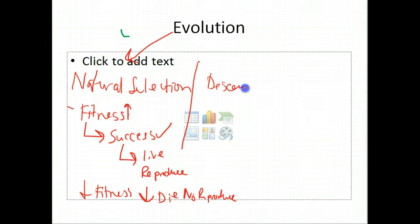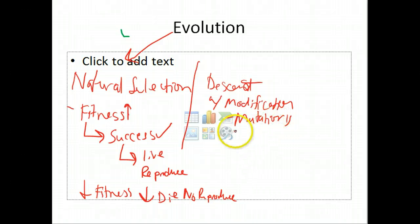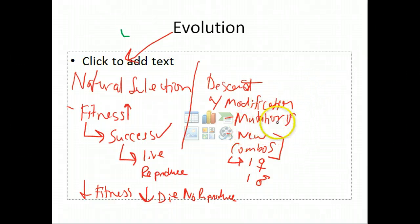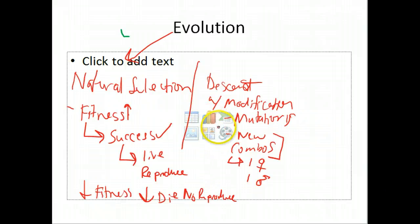Another phrase is descent with modification. What are the modifications? Well, they're mutations and their new combos of genes. Remember, you have, for almost every organism, you have kind of like a mama and a papa organism, so there's new combinations, one from mom, that's this female symbol, and one from dad makes these new combos.